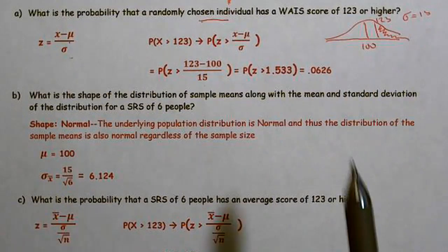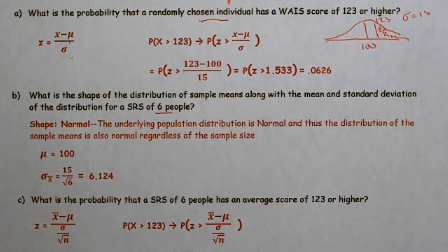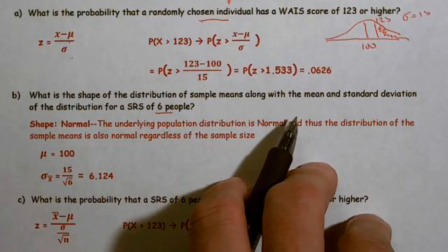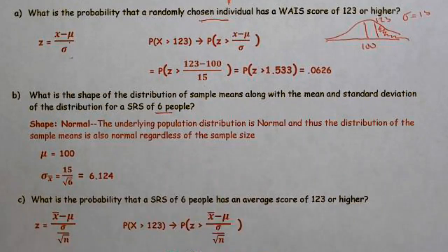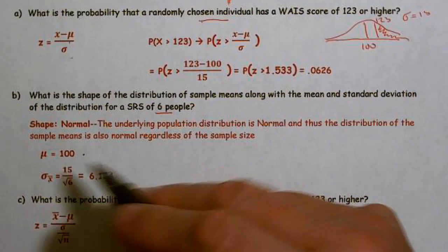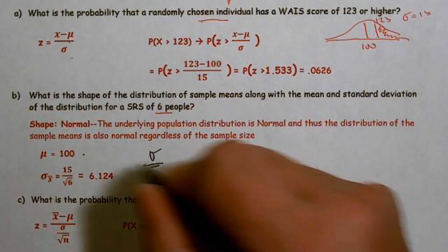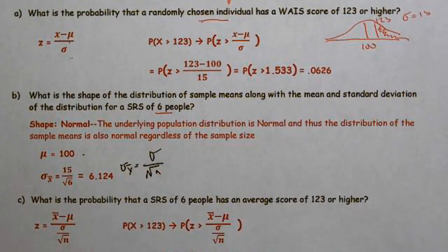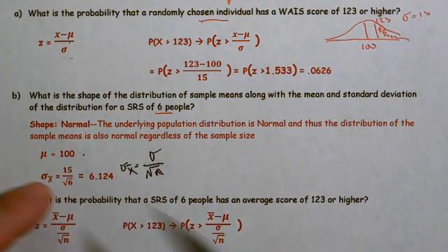Next: what is the shape of the distribution of sample means, along with the mean and standard deviation? Well, they told us the underlying population is normal, and because it's normal the distribution of sample means will also be normal. The mean will be 100, and the standard deviation of x̄ is the population standard deviation divided by the square root of n — so σ/√n = 15/√6 in this case.